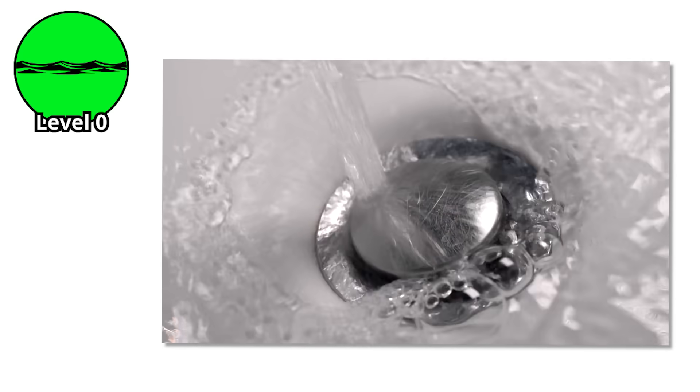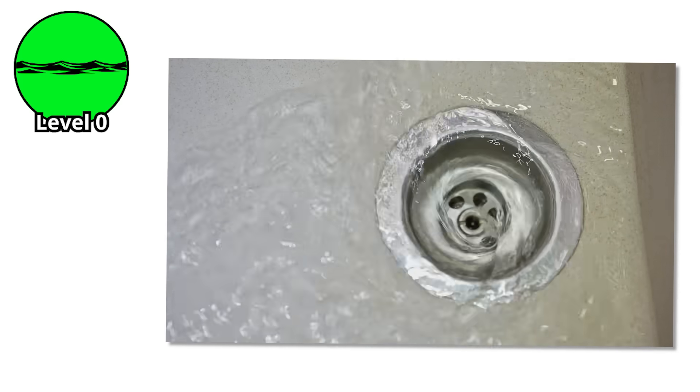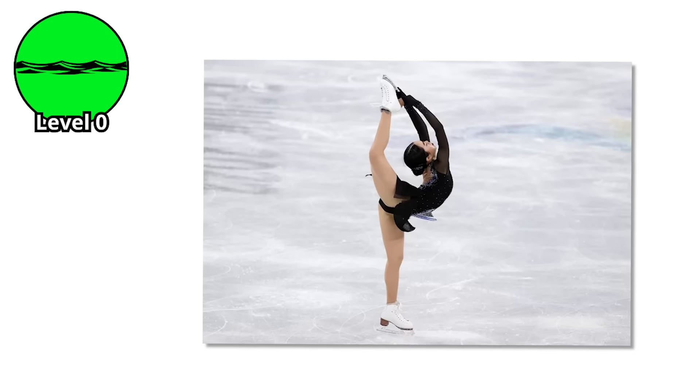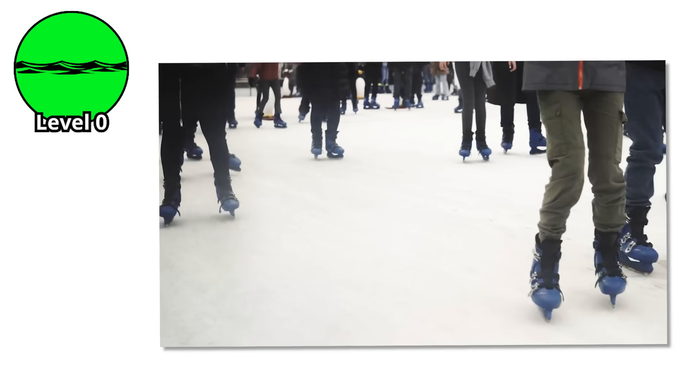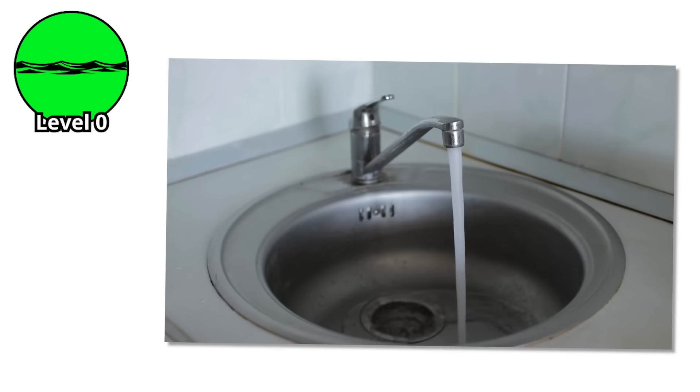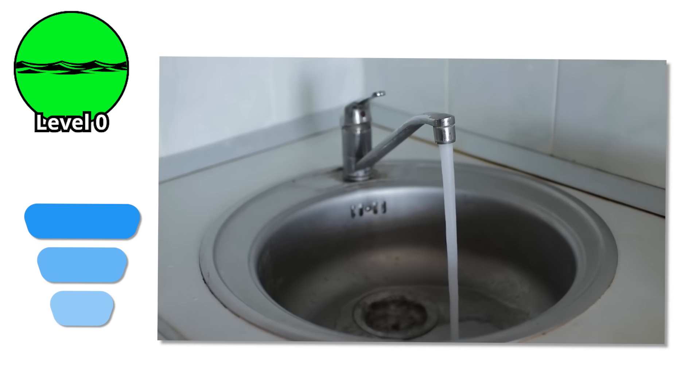It forms because water doesn't just fall straight down. As it drains, conservation of angular momentum takes over. The same physics that makes ice skaters spin faster when they pull their arms in. The water accelerates as it spirals inward, creating that characteristic funnel shape we all recognize. Physics 101.